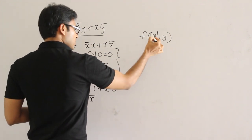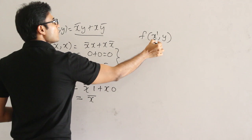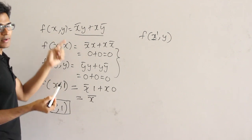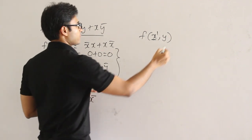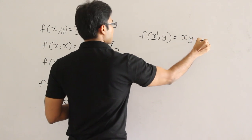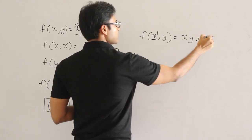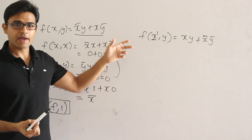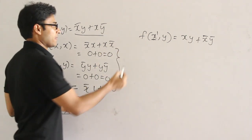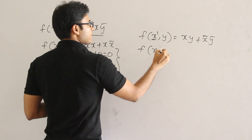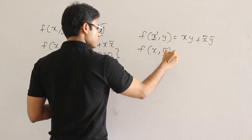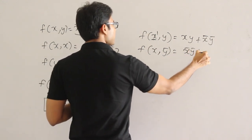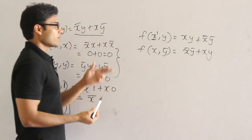f(x, x complement) — what do I get? That is going to be xy plus x'y', which is exclusive NOR. Again we are out of luck because that is XOR, not AND or OR. Let's try f(x, y complement): in place of y I am putting y complement. That gives x'y' plus xy — again we got exclusive NOR. We are out of luck.